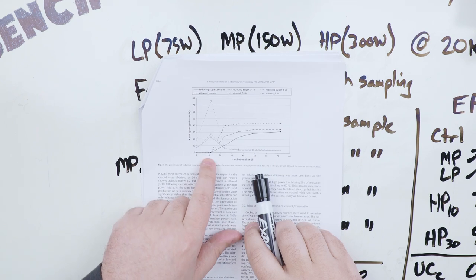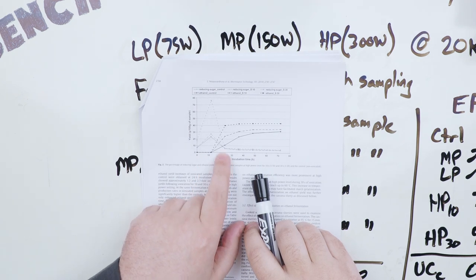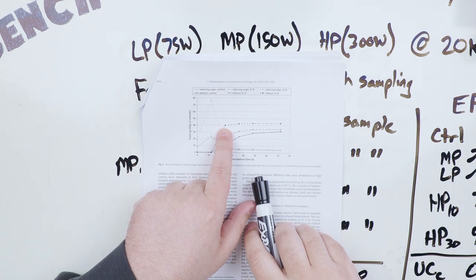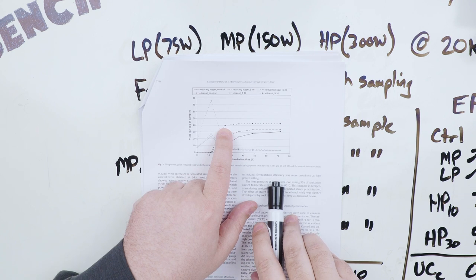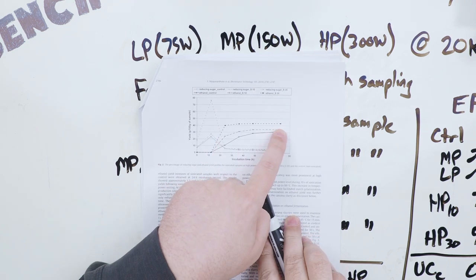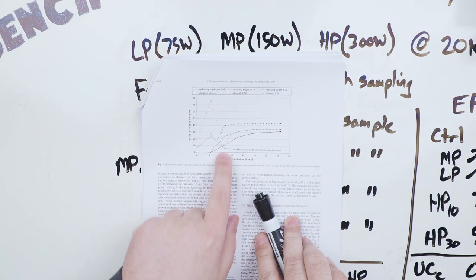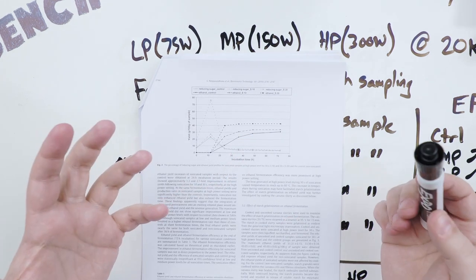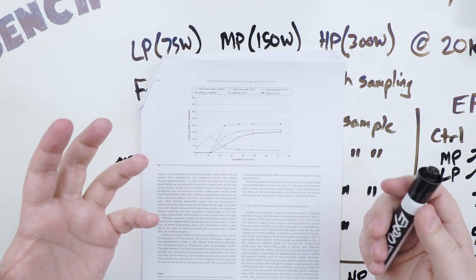You can see that after about 24 hours, the sonicated for 30 seconds has reached 40 grams per 100 grams of sample, and it only goes up to 43 by the end. So it's essentially plateaued at that point, whereas the other ones take until about 48 hours to reach their plateaus. You get your fermentation done about 24 hours sooner.